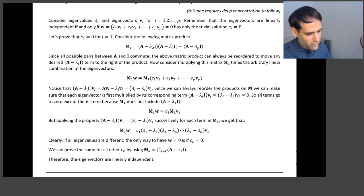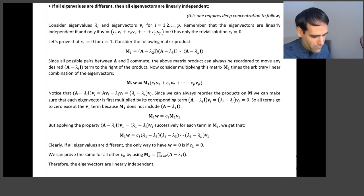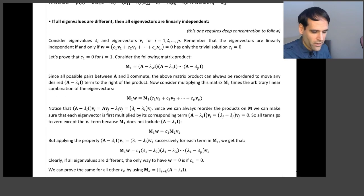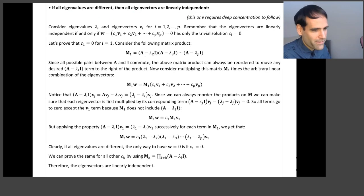So I would recommend you to go to the whiteboard, or this proof is also in the notes, and have a read. And then you will be convinced that, indeed, if all the eigenvalues are different, then all of the eigenvectors are linearly independent. Okay, thank you very much for watching. See you in the next video.